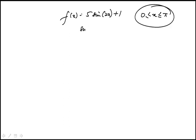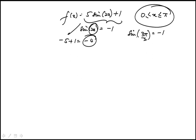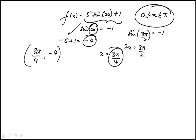The least value would be when sin(2x) is minus 1. In that case, the value of the function would be minus 5 plus 1, which is minus 4. That's going to happen when sin(3π/2) equals minus 1. So 2x equals 3π/2, which happens at x equals 3π/4. So our minima is at coordinates (3π/4, -4).